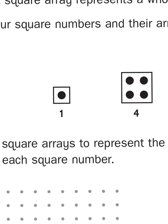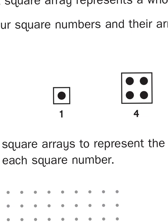In this first array it is very simplistic — it's got one row of 1, which means it's just a single dot. Now that doesn't seem like an array until I apply it to my second array here, which is the square number 4. I have increased my array by adding a dot to the column and then adding another column. So instead of one group of 1, I now have 2 groups of 2. 2 times 2 is 4.